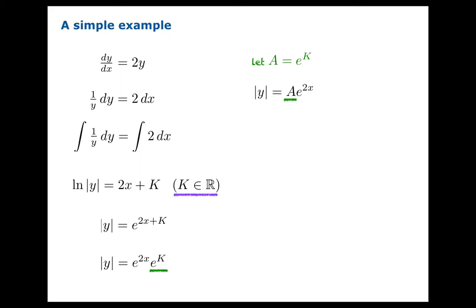Now the thing to notice is K could have been any real number. But when you exponentiate K, you're going to get a positive number. So this new constant A that we're writing really has to be positive. And that actually makes sense since the left side is the absolute value of y. The right side can't be negative.